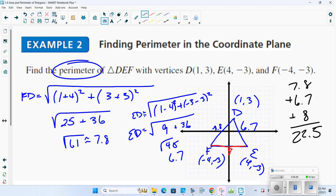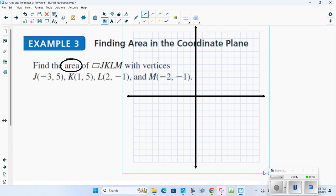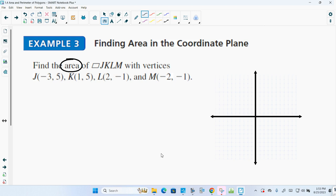Find the area now. I want to know the area of this figure. First, I have to draw all the points. And again, I apologize for having to switch this. A little too big for me to actually show you the picture here. So I'm going to plot those points. J(-3, 5), K(1, 5), L(2, -1), and M(-2, -1).